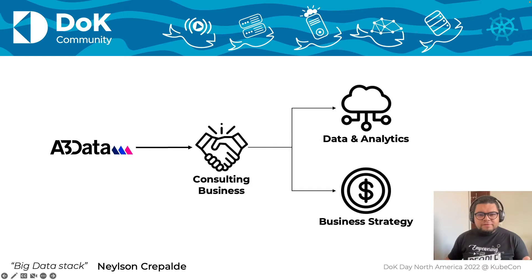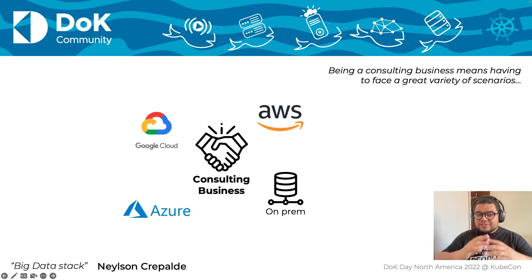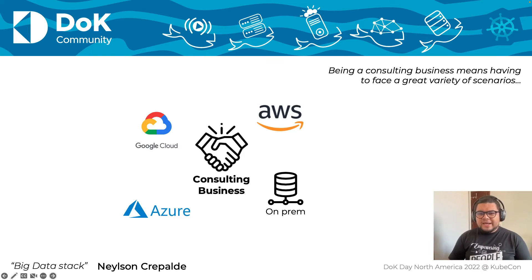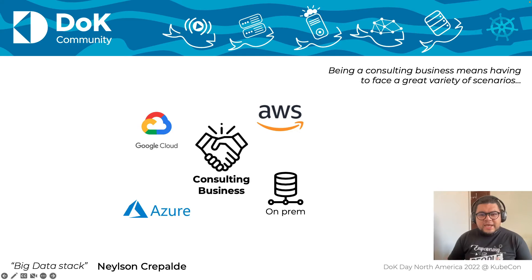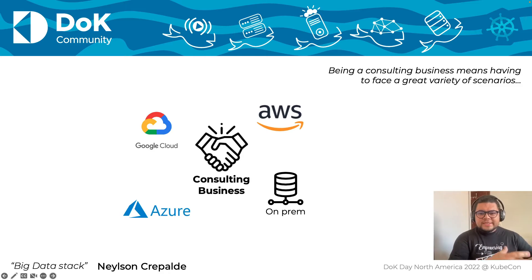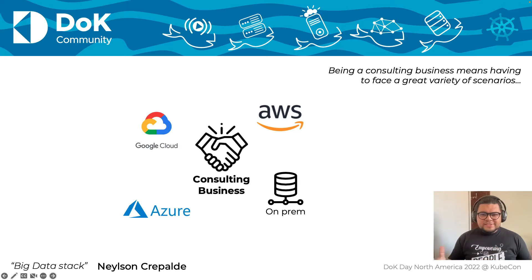As a consulting business, we face a great challenge: we have lots of different scenarios. We have customers from very different industries, very different business models, and very different technology stacks. We have customers that work with AWS, with Google Cloud, with Azure, and some customers that have their data stack running on-premises. This is very challenging because if we build a solution for a customer on AWS and want to build exactly the same data lake structure on Google, we essentially have to rebuild the whole thing from scratch because the services are different — you simply cannot do lift and shift.